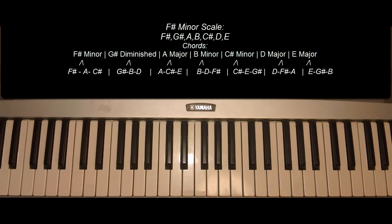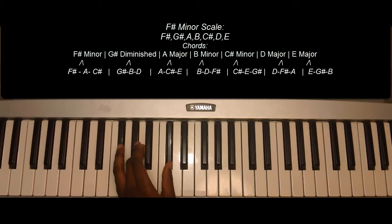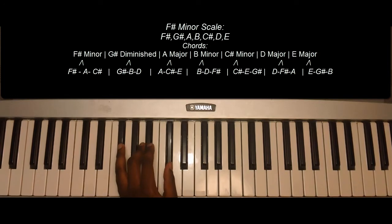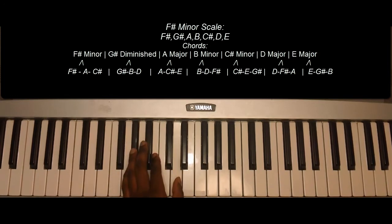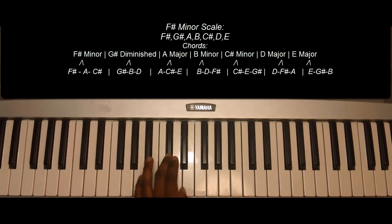Chords of the F-Sharp minor scale. F-Sharp minor: F-Sharp, A, C-Sharp. G-Sharp diminished: G-Sharp, B, D. A major: A, C-Sharp, E.